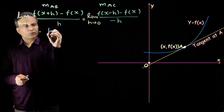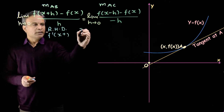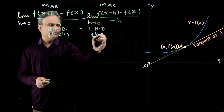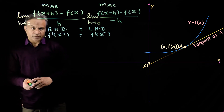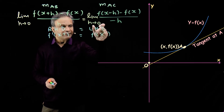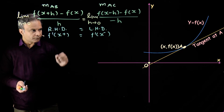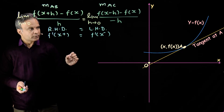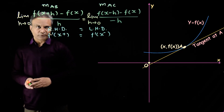This limiting value from the right is called the right-hand derivative, written as f′(x⁺). And this limiting value from the left is called the left-hand derivative, written as f′(x⁻). At point a, the function is continuous and has smooth curvature, and the left-hand derivative equals the right-hand derivative. Therefore, at point a, the function is differentiable — point a pe function differentiable hoga kyunki wahan function continuous hai aur left-hand derivative right-hand derivative ke equal hai.